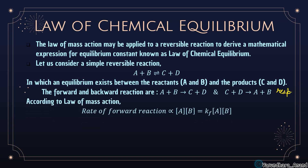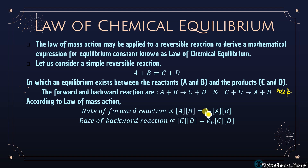According to the law of mass action, the rate of the forward reaction is directly proportional to [A][B], so the rate equals Kf·[A][B]. Similarly, for the backward reaction the rate is directly proportional to [C][D], giving rate equals Kb·[C][D].